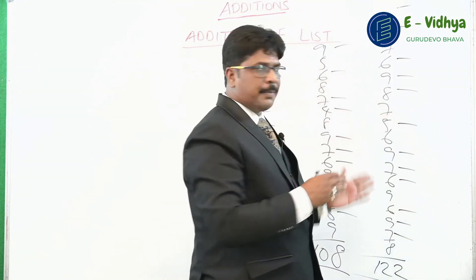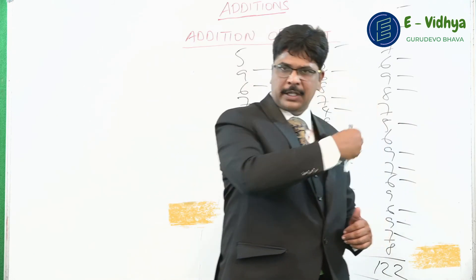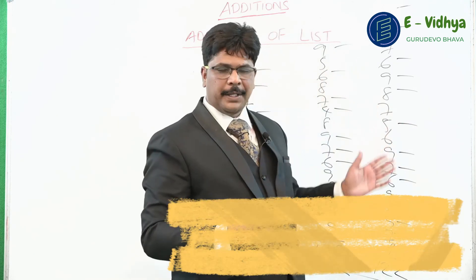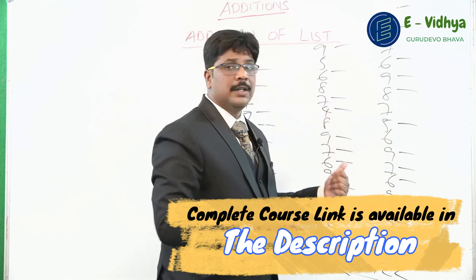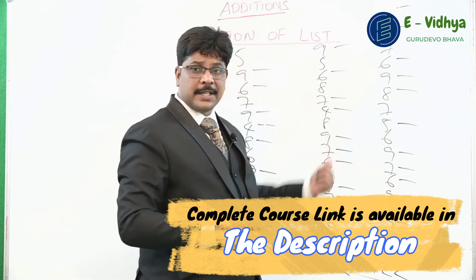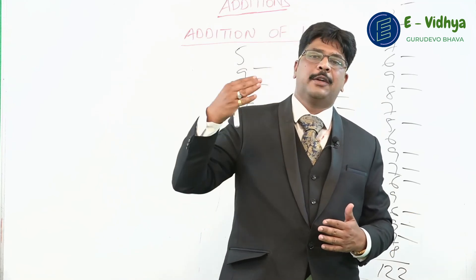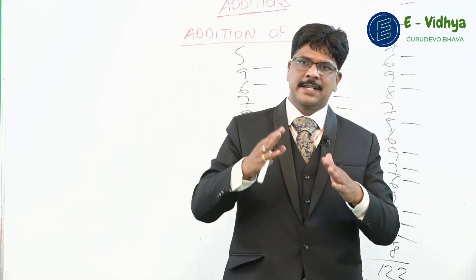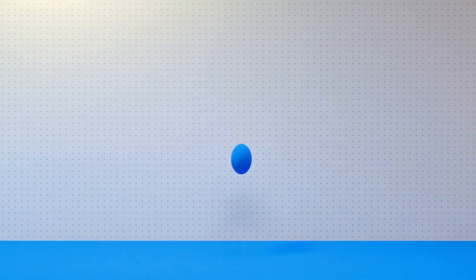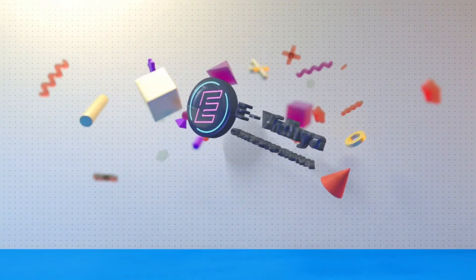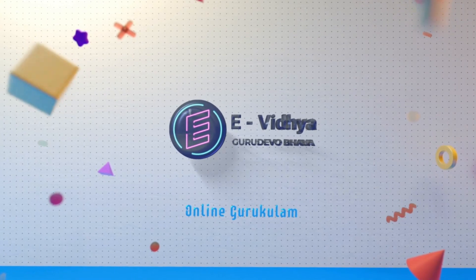I think you understood the concept by now. Finish off all the exercises given to you in this particular topic. Once you are done, we will go to the next higher aspects — this was only for single digit lists. We will talk about higher lists in the next topic. Finish your exercises and get back to me. We'll see you next time.